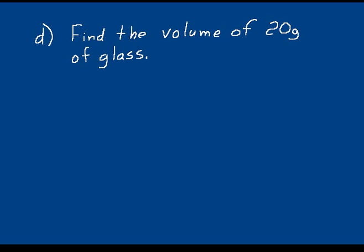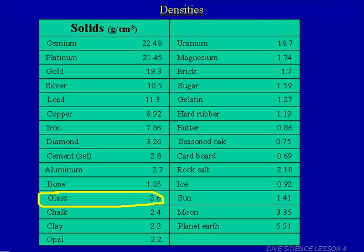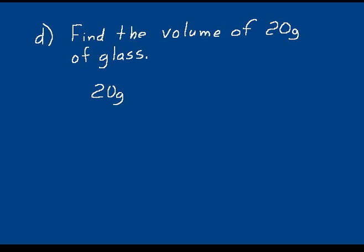Density values can be used as a unit multiplier. For example, in practice problem D, find the volume of 20 grams of glass. First write down what's given — 20 grams — and identify what you want. Then go to the density table: glass has a density of 2.6 grams per cubic centimeter, which you write down as 2.6 grams per cubic centimeter.